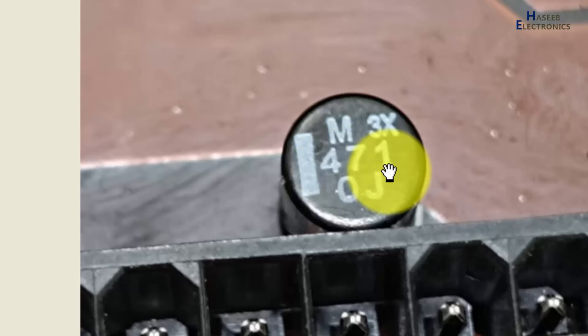47, these two numbers will be written same as it is—that means four seven. Then this is the multiplier. If it is one, we will add one zero. Four seven zero, that means four hundred seventy microfarad.